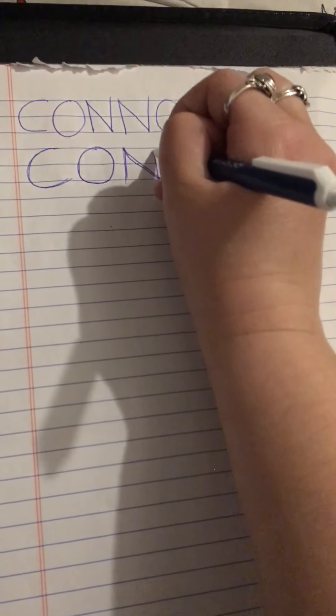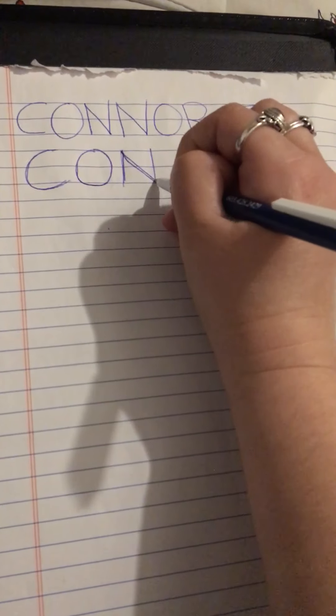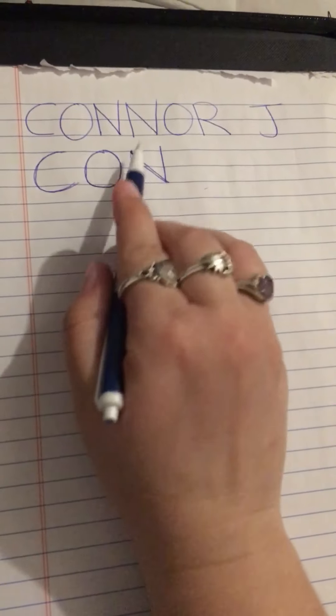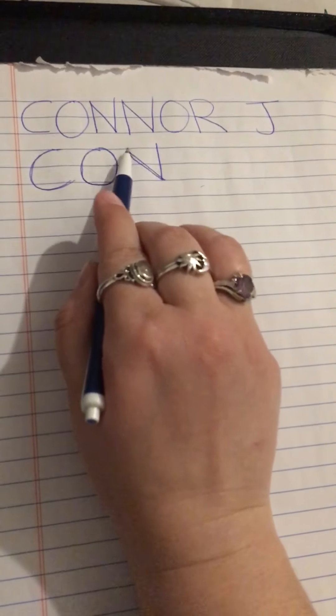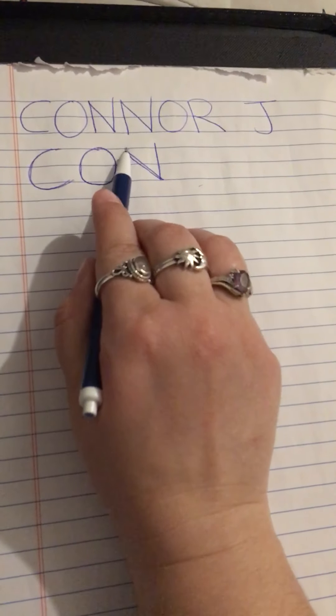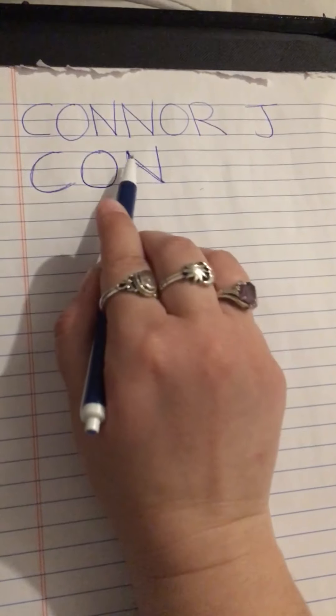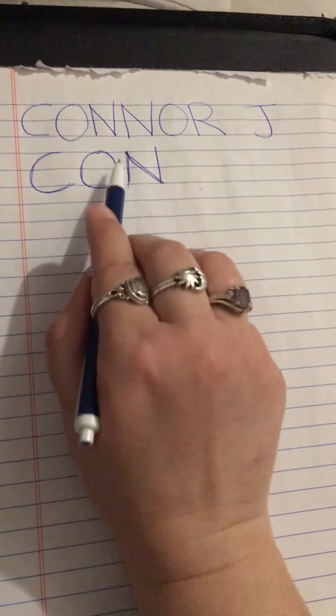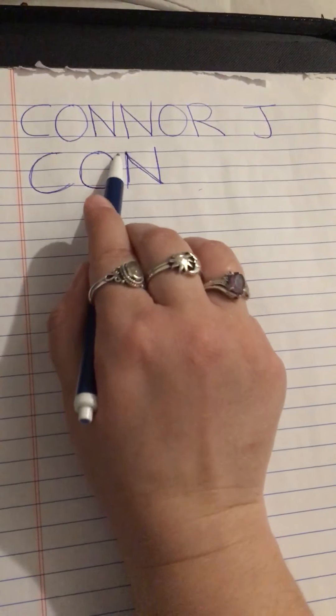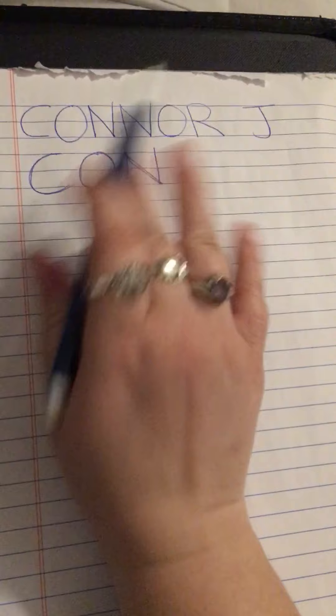Once we've come from the top and drawn our diagonal line down, from down here we're just going to go straight back up again. If you look, my N has points over here and over here. See if you can make yours a point and not a rounded corner — just do the best you can.